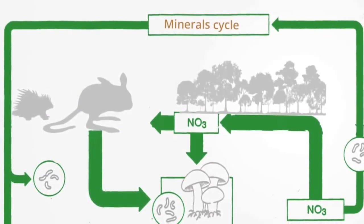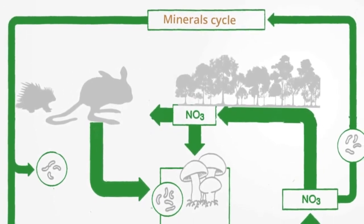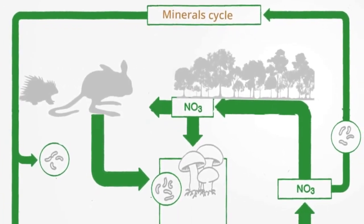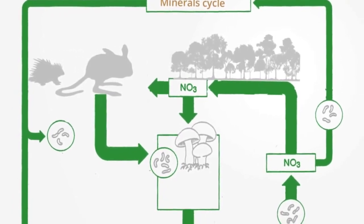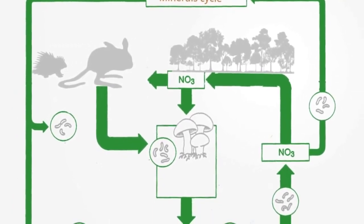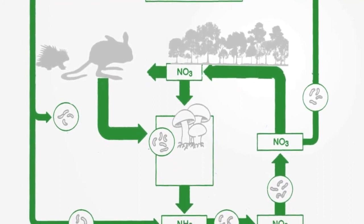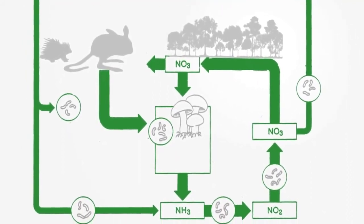Alongside the flow of energy through food webs is the cycle of mineral nutrients, the core substances required for the construction of biological material and processes. Carbon, water, oxygen and nitrogen have been continuously cycled through the biosphere from one generation to the next for billions of years.